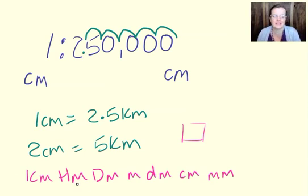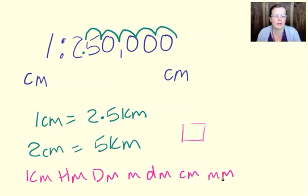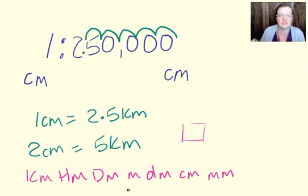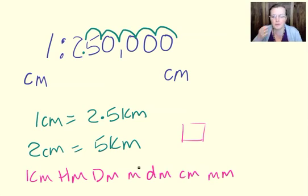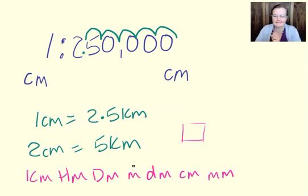So just jot it down. It's easier just to remember: millimetres, centimetres, decimetres, metres, decametres, hectometres, kilometres. Don't recite it until you've learnt it properly, otherwise the problem you'll have is you'll learn it the wrong way around. Happy? Well done.